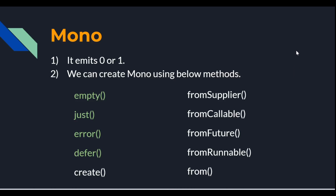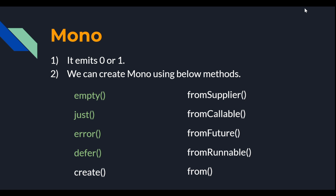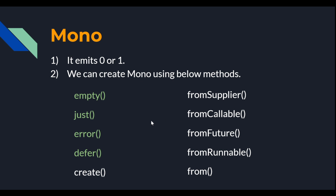Hi, hello, welcome back to Java Talkies. In the last video we discussed how to create a Mono publisher using empty method, just method, error method, and defer method. In today's video we will discuss creating a Mono publisher using create, fromSupplier, and fromCallable. If you haven't watched the previous video, please watch it — I'll add the video link in the description.